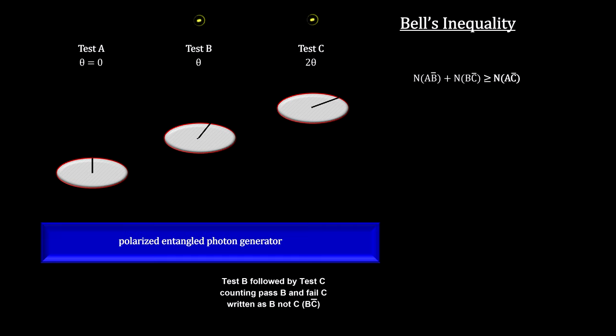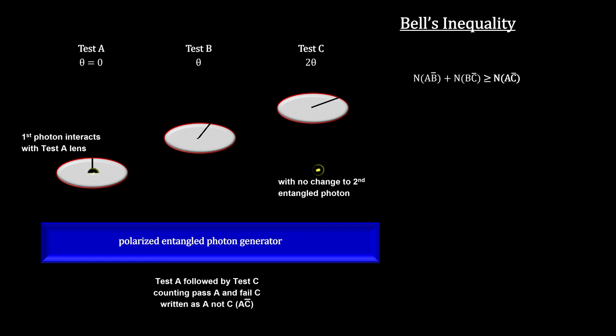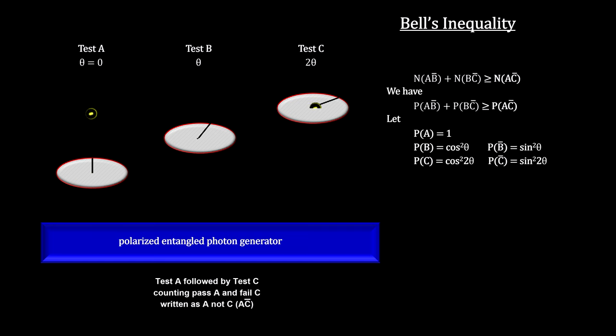Being a thought experiment, we cannot actually run the tests and count the results, but we can use the quantum state probabilities to compute the results for these three numbers.